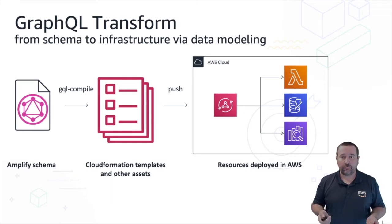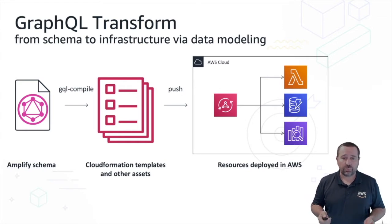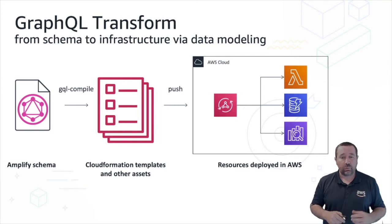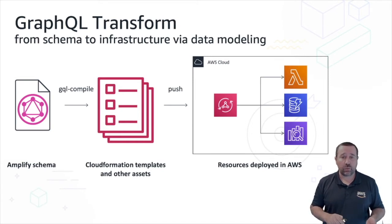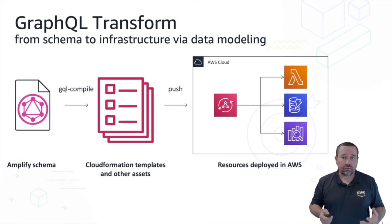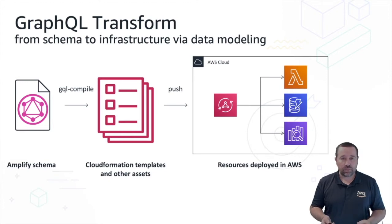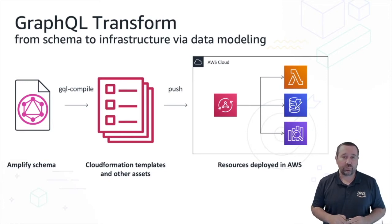When creating this GraphQL schema, you'll need to think about a few things: the types of data you want to store and the fields on those types, the connections or relationships between your data, the access patterns and how you want to query your data, as well as any security restrictions you want to overlay on your data model. Once you understand these things, you can define your schema, attach the GraphQL directives from Amplify, and Amplify will do the translation to CloudFormation and push your resources into the cloud.